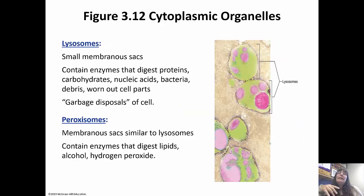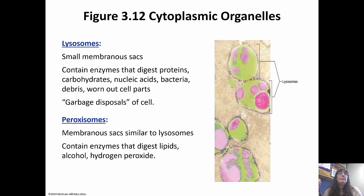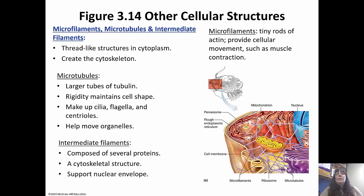Lysosomes are small membranous sacs containing hydrolytic enzymes that break down anything — they're the garbage disposals of the cell. They break down foreign material or even worn-out organelles. Peroxisomes are very similar to lysosomes, except instead of hydrolytic enzymes, they have oxidative enzymes, which digest alcohol, hydrogen peroxide, and lipids. So lysosomes use water to break bonds, while peroxisomes neutralize free radicals and break down lipids and alcohols. Liver cells have more peroxisomes because of their detox functions.